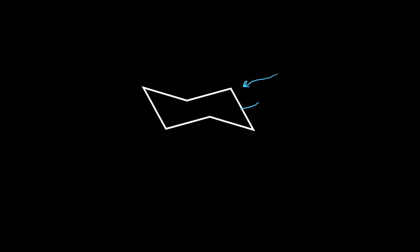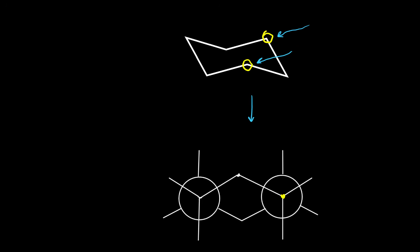To understand the difference between axial and equatorial, first we need to derive the Newman projection of cyclohexane. If we look along these two bonds, we see this Newman projection. These two carbons correspond to these two points — this carbon is CH2 and this carbon is another CH2. Now we can easily see the axial and equatorial positions. These hydrogens are axial and these hydrogens are equatorial, and we can see that they are all staggered.